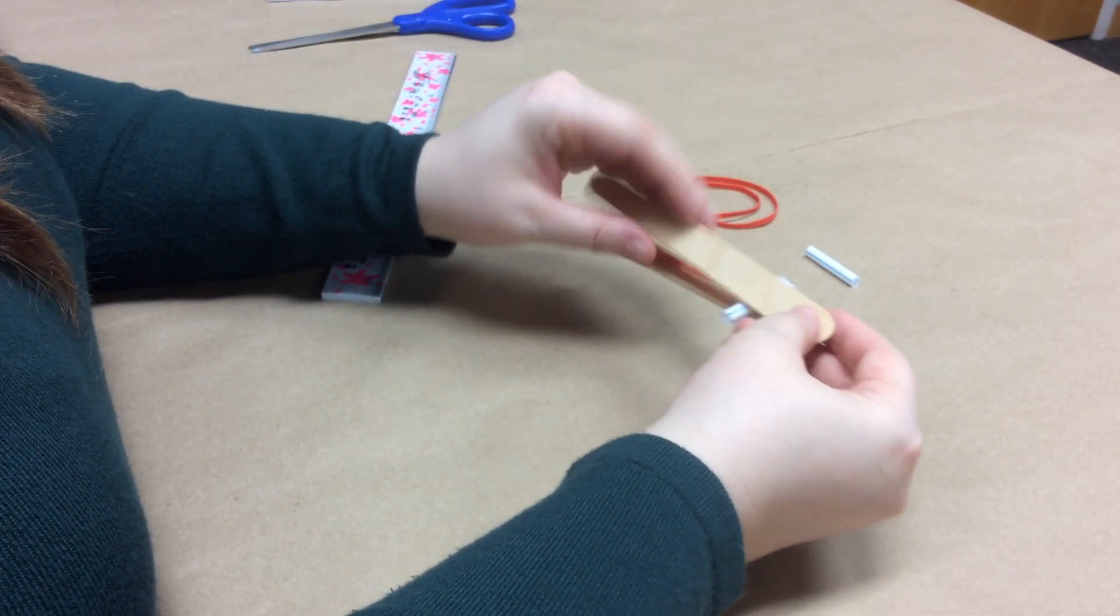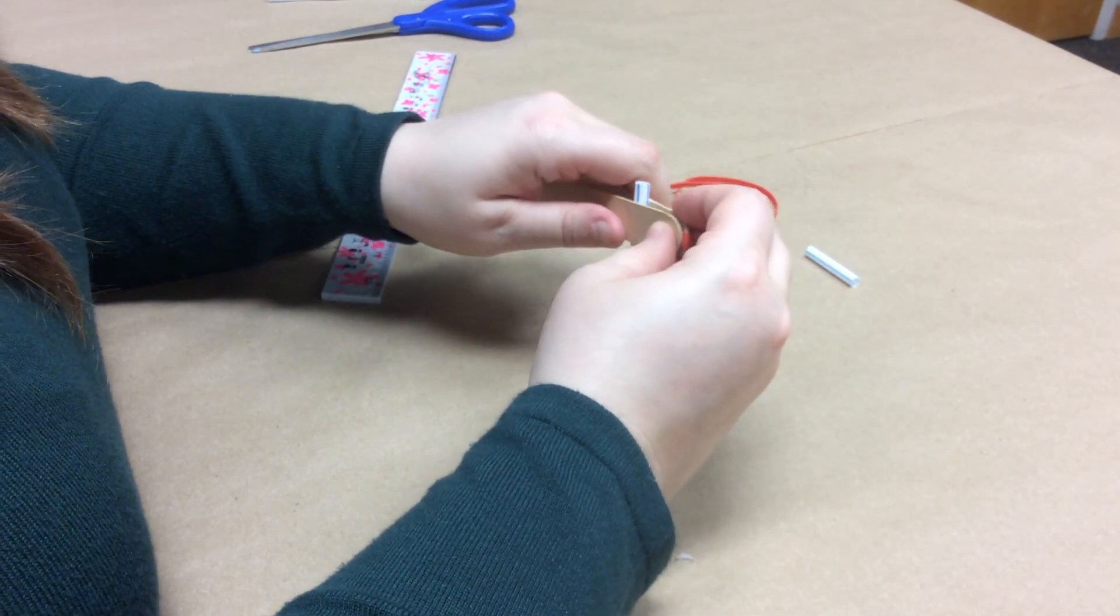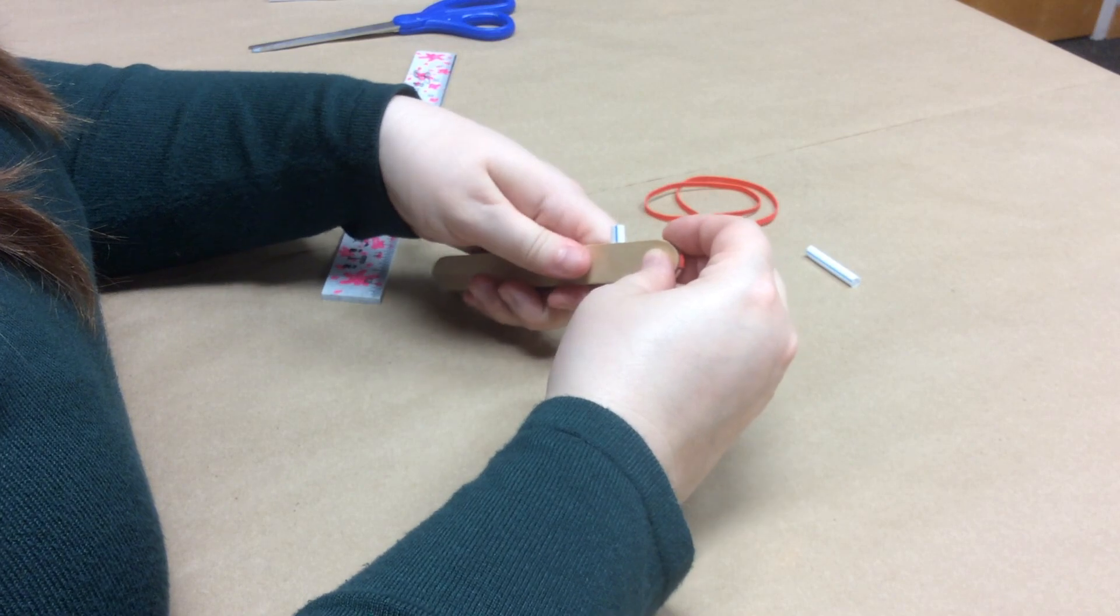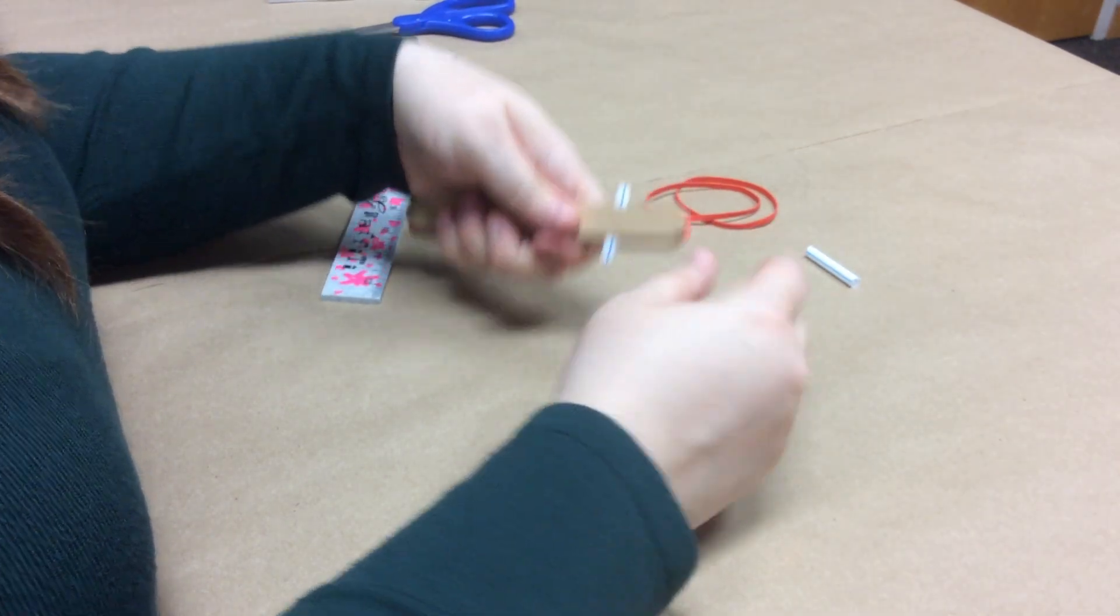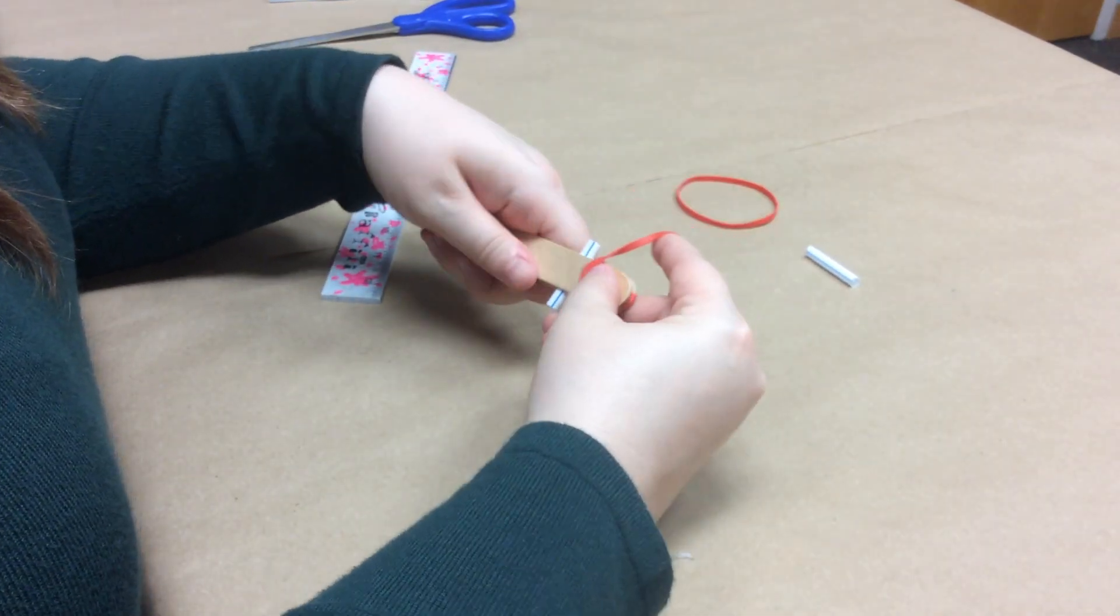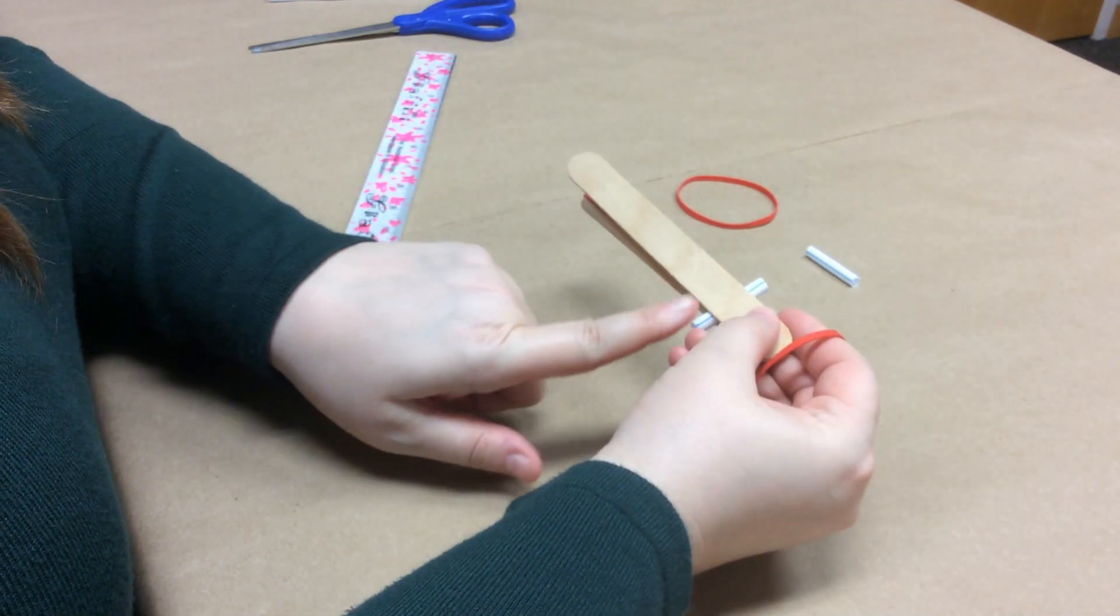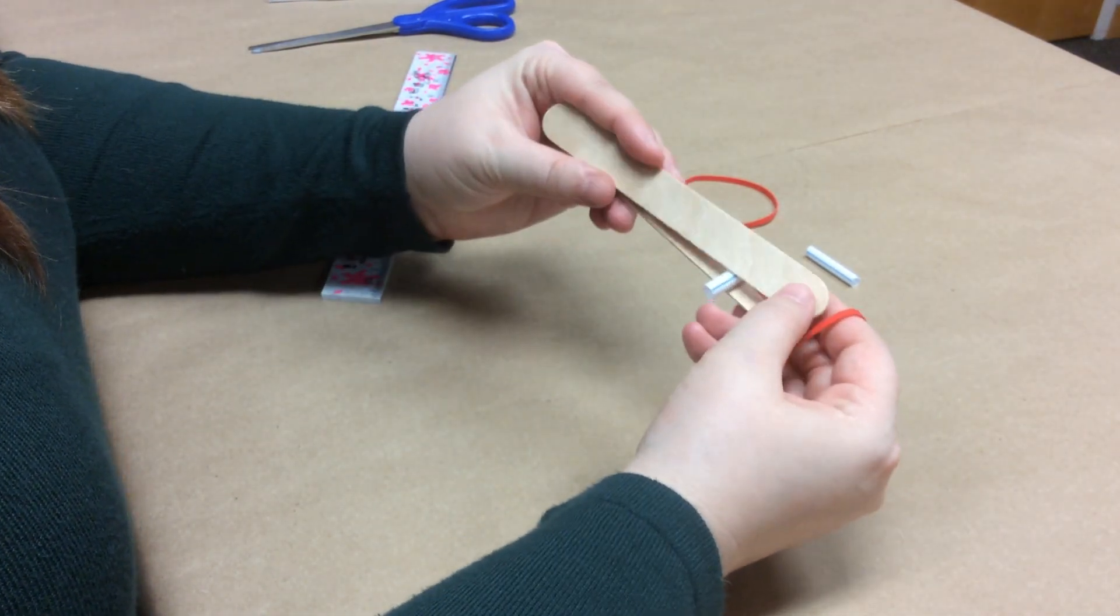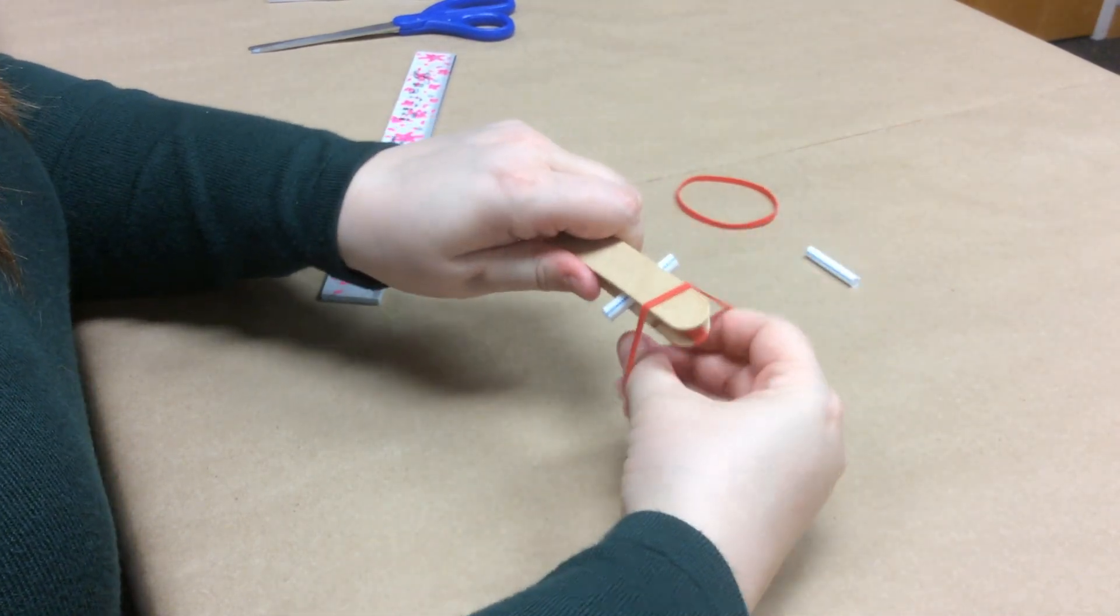So next you are going to sandwich your other popsicle stick on top of this. It is okay if the straw gets squished a little. So you are going to sandwich your other on top, hold it in one hand, and we are going to wrap a rubber band around this side. So we are going to rubber band it together on the outside side of the straw. So, we have our straw, we have our two popsicle sticks, and we are going to come on this side of the straw. So right here.